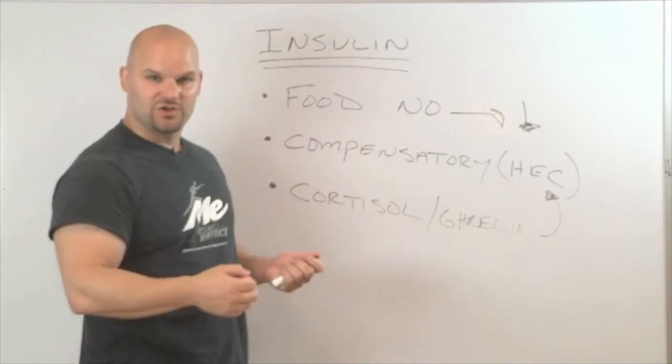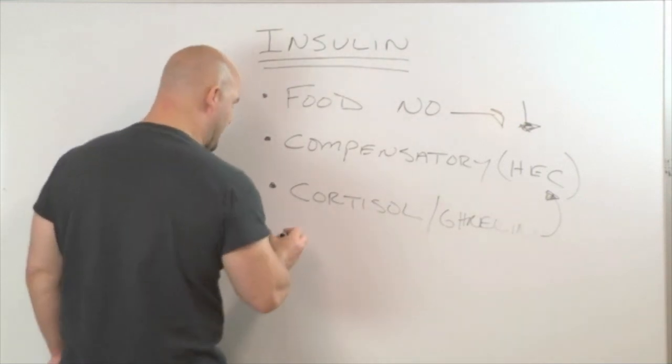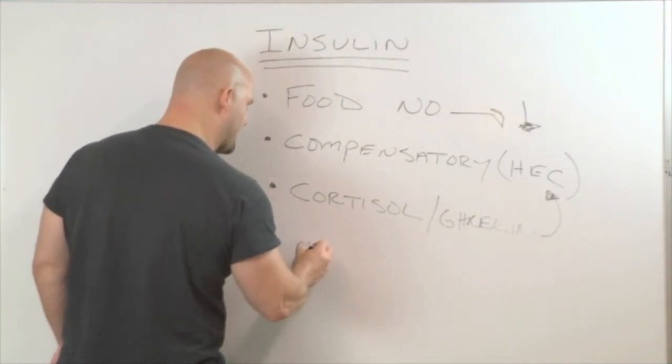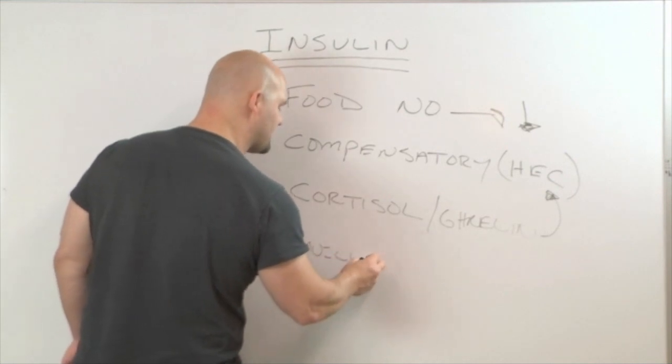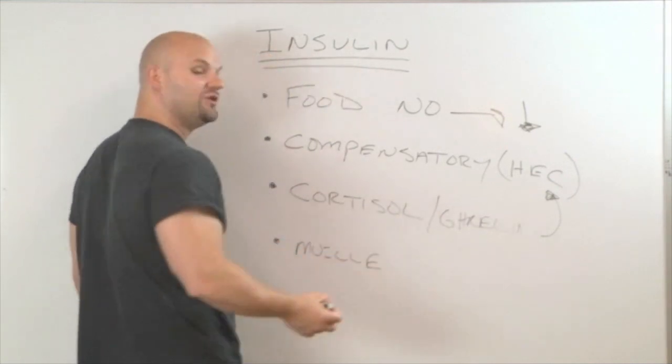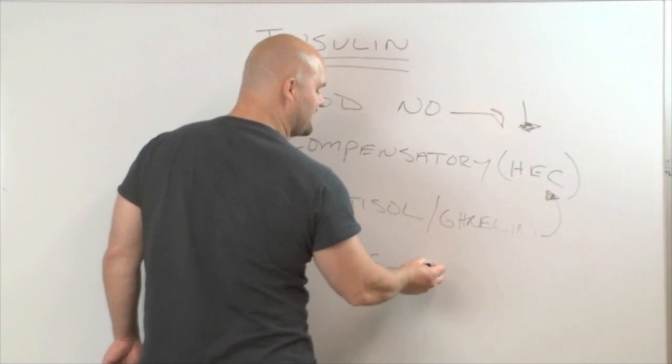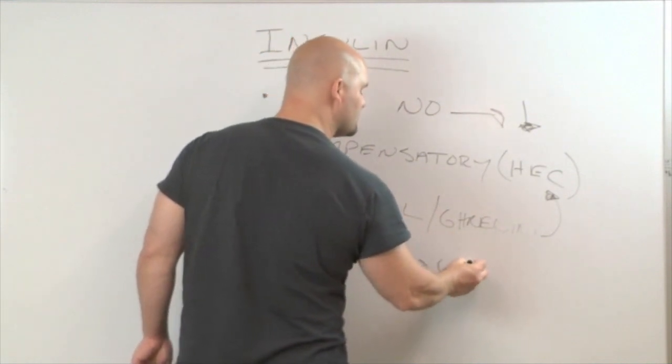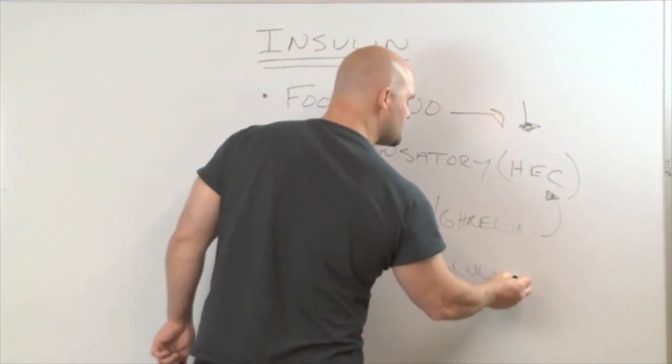The other thing that fasting can do is fasting can strip the body of muscle mass. And the reason it does that is because when the body is left without glucose, it will want to make its own. So it will produce glucose from muscle.